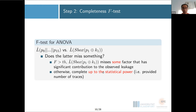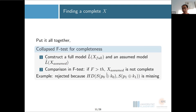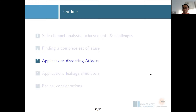Luckily, we have a well-accepted technique in statistics called the F-test for analysis of variance. In the F-test, if the F-statistic is larger than some threshold, we say the model you assumed actually misses some factor that has a significant contribution to the observed leakage; otherwise we say it's complete — up to the statistical power, which depends on the number of traces provided. Put together: we construct a full model and an assumed model, use realistic traces to fit both models, then compare them via the F-test. The F-test tells us whether the assumed model is missing something, though not what it's missing.